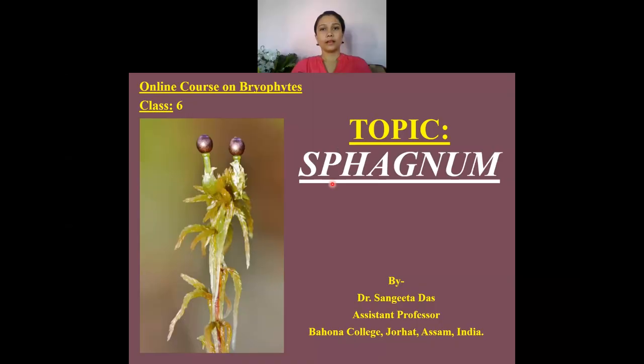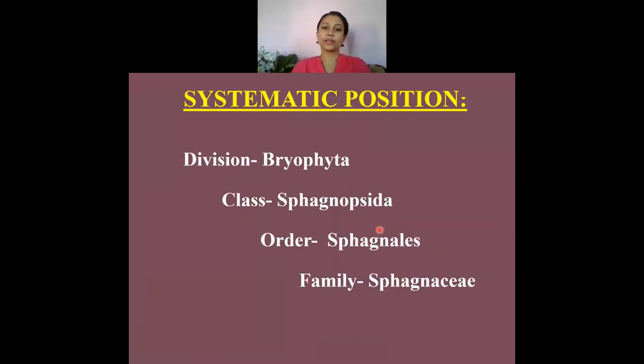Hello viewers, welcome to my class. Today we are going to discuss the topic Sphagnum, which is another interesting genus within the class Sphagnopsida among the bryophytes. This genus Sphagnum is also known as peat moss due to its ecological importance in the formation of peat. Systematically, it belongs to the family Sphagnaceae, order Sphagnales, class Sphagnopsida, within the division Bryophyta.